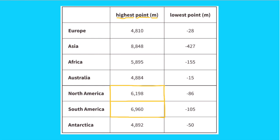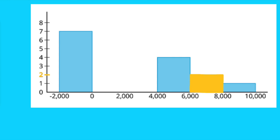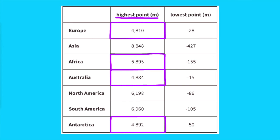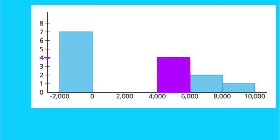North America and South America have very similar highest points, so they are represented together going two units high on the histogram, ranging from 6,000 to 8,000 meters horizontally. The remaining four continents have highest elevations grouped in one column reaching four units vertically, ranging from 4,000 to 6,000 meters, meaning four continents have a highest elevation between 4,000 and 6,000 meters.